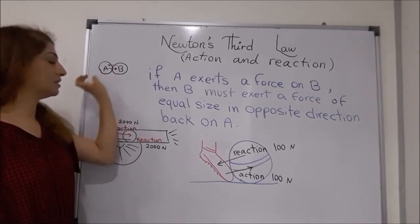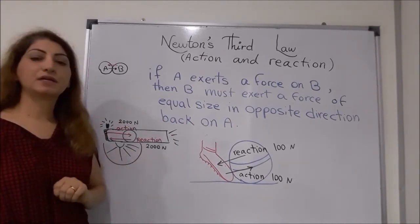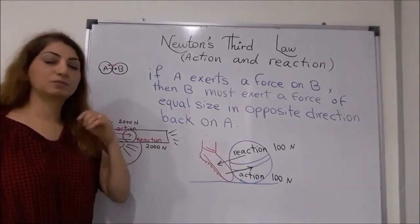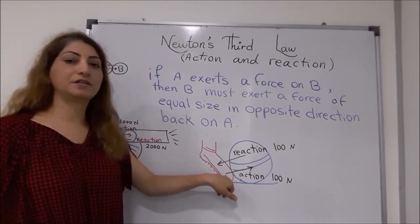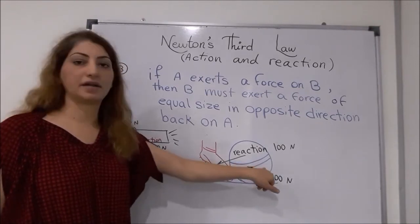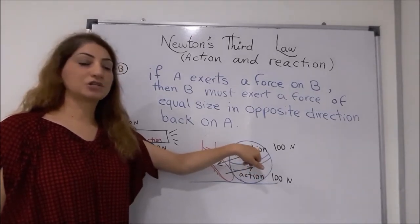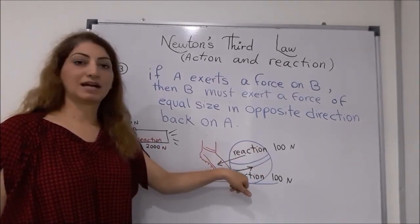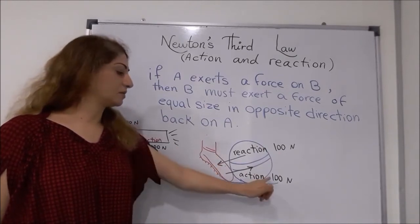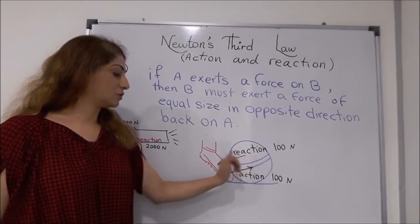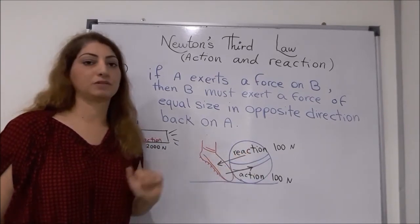So if object A exerts a force on object B, then B must exert a force in the opposite direction with the same size. For example, there is a football player trying to kick the ball. He is exerting a force on the ball — pushing it. If the force the player exerts on the ball is 100 N to the right, then the ball also exerts a reaction force of 100 N in the opposite direction, to the left — from the ball back to the shoe of the player.